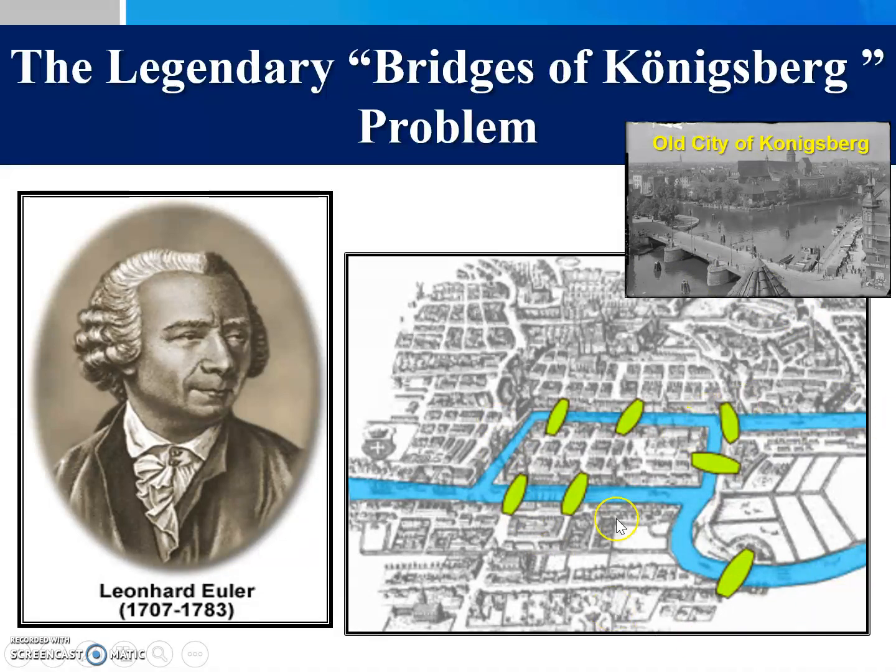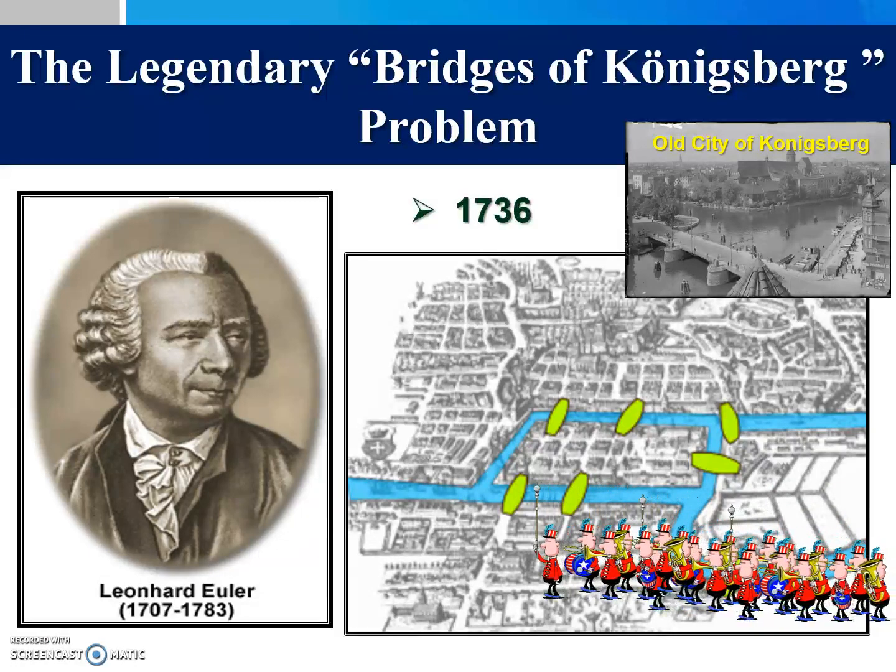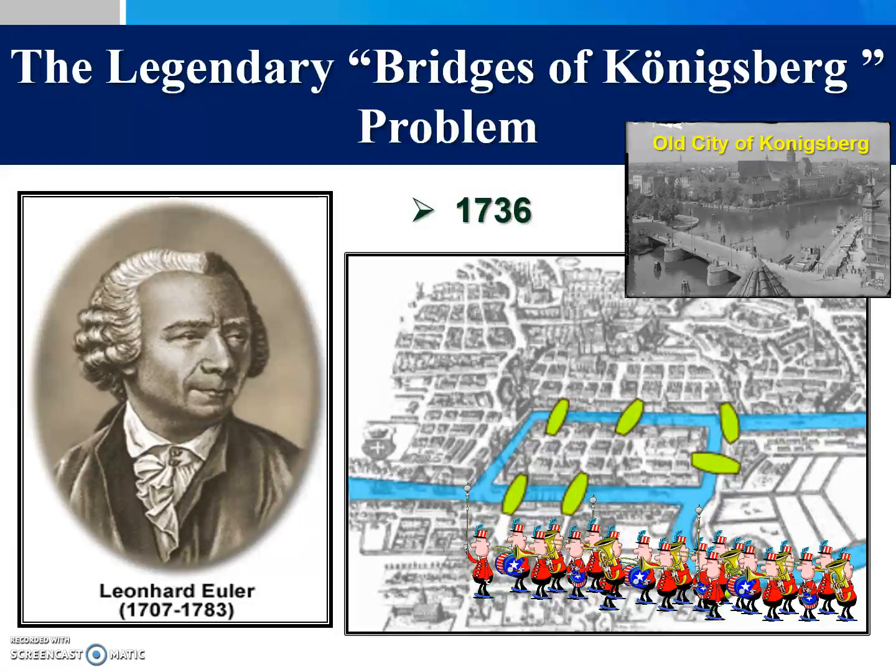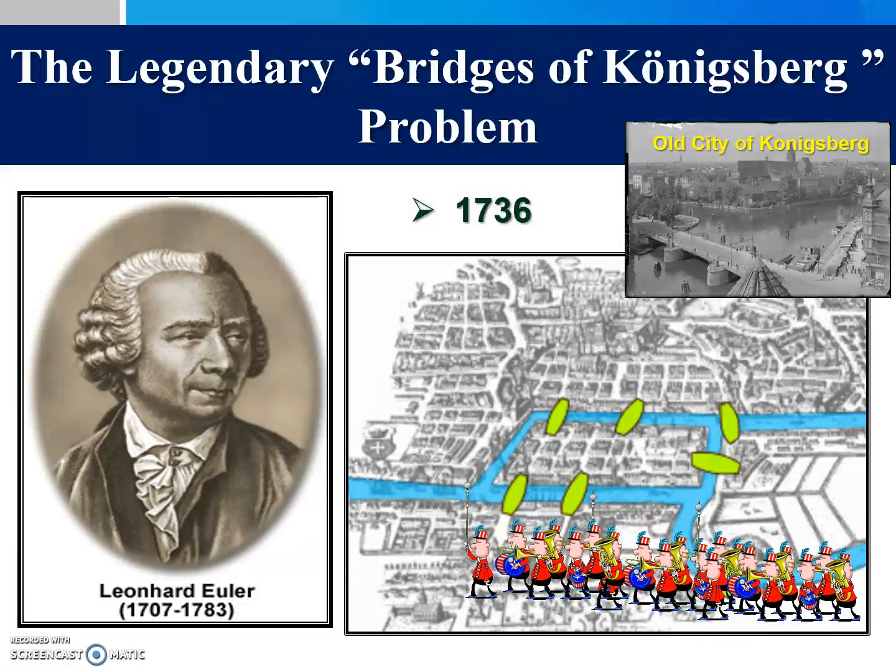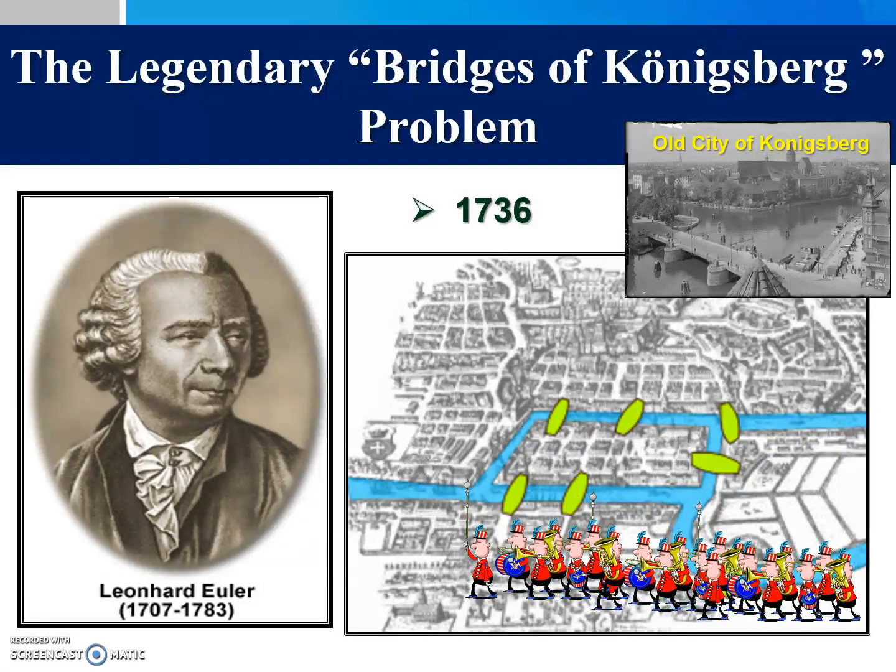As we can see from the map here, this is the old city of Königsberg in the Soviet Union, which is in Russia now. In 1736, they planned a celebration featuring a grand parade. Designing the parade road was complicated because sections of the city were located on islands in the Pregel River and connected to the mainland by a network of seven bridges.